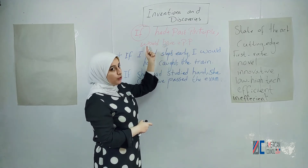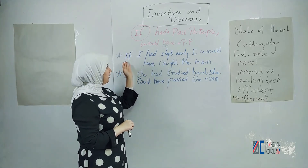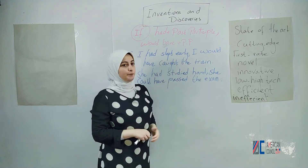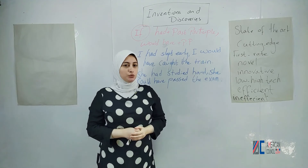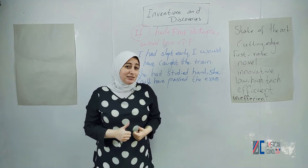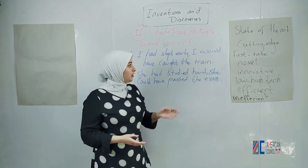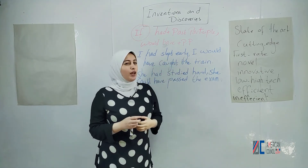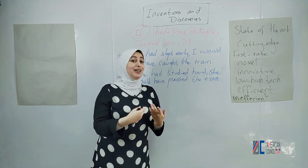In the second part of the sentence, it would, could, or might have, and past participle. Like the example here: if I had slept early, I would have caught the train. I use it to speak about something in the past that didn't happen, but I wish it had happened this way.